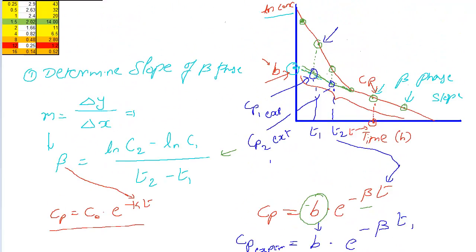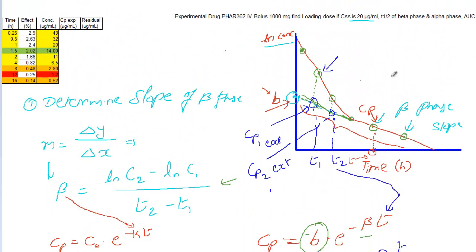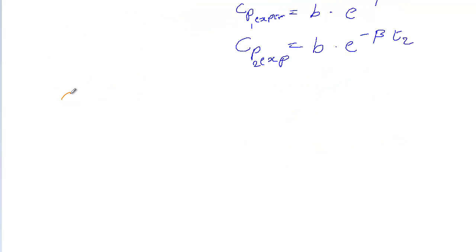Now that we know the extrapolated curve, the next step is to find the difference between the actual plasma concentrations — the green dots — and the extrapolated values. Subtracting these gives the residual. We plot this residual line, which is the Cp residual line.